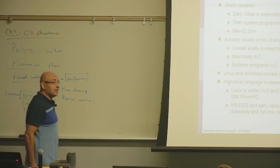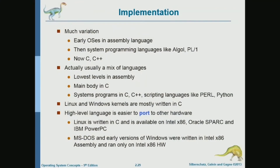Now, regarding the implementation of the operating system: earlier operating systems were written in machine code and assembly, but modern operating systems are written in C and C++. The systems that we use — like Linux, Windows, Mac OS, and Android — are all written in C.